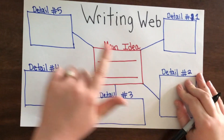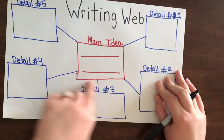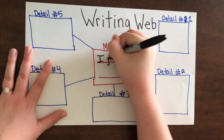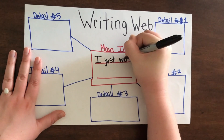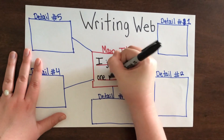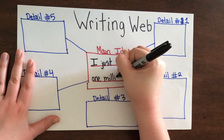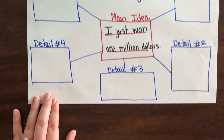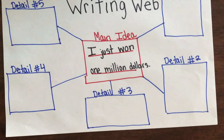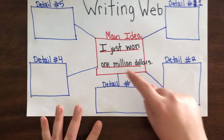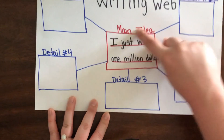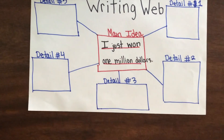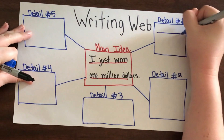For Mrs. Pope's main idea — what is my story going to be about? Mrs. Pope's story is going to be: 'I just won a million dollars.' That is the main idea of my creative writing story — this is what the whole story is going to be about, and each of these details are going to be supporting that main idea.